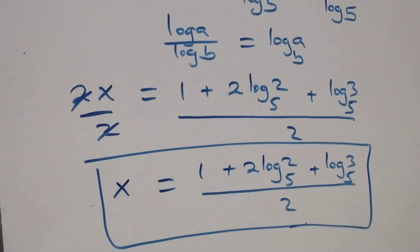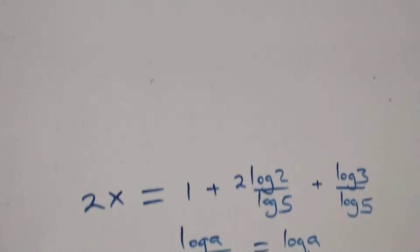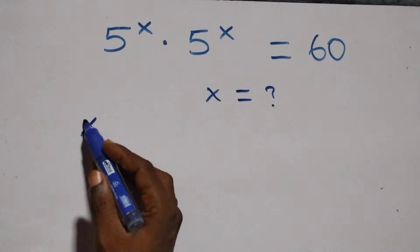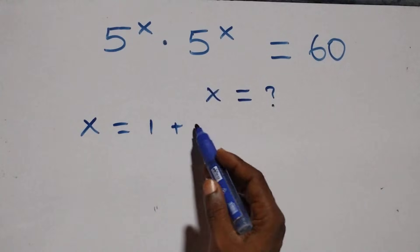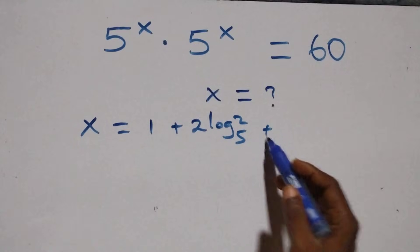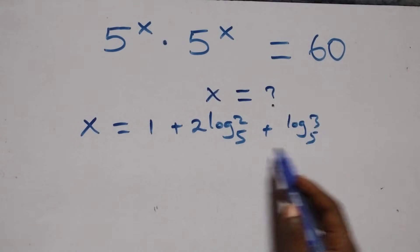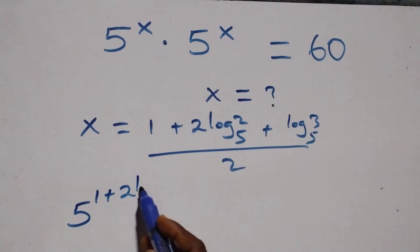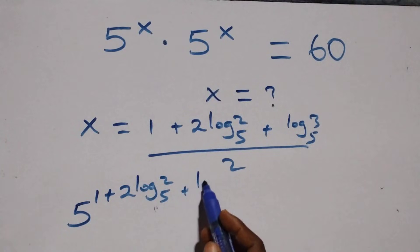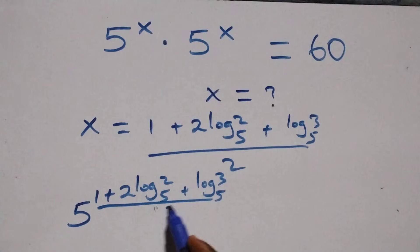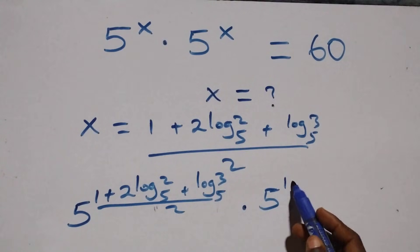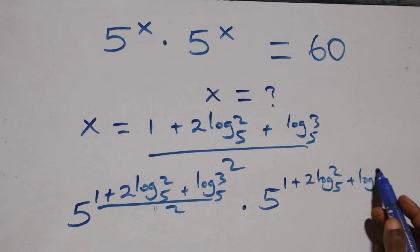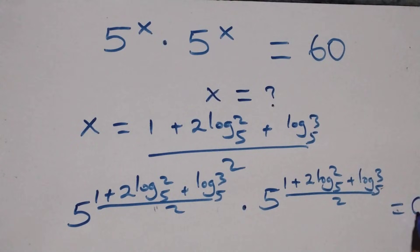Now let's verify this satisfies the original problem. We substitute the value x equals 1 plus 2 log 2 base 5 plus log 3 base 5, all over 2. This gives us 5 raised to power (1 plus 2 log 2 base 5 plus log 3 base 5, all over 2) times 5 raised to the same power, equals 60.